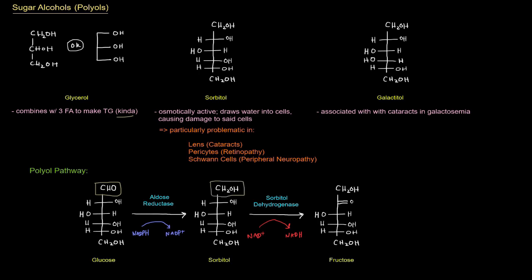So aldose reductase acts on this aldose, which is glucose, here, uses NADPH to actually reduce glucose to sorbitol, and then sorbitol in this polyol pathway can be reduced to fructose by sorbitol dehydrogenase, which requires NAD+.